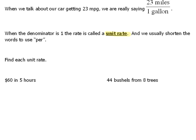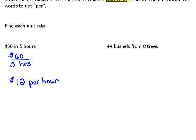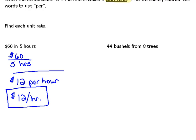We're going to use that idea here and write some unit rates. This first one says that if we have $60 in five hours, we want to know the unit rate. So if I compare this and say $60 for five hours — if I want to write this as a unit rate, I need my denominator to be 1. So we're just going to go ahead and do this division. 60 divided by 5 would be 12, so that's the same thing as saying $12 per hour. Either way of writing it would be acceptable.